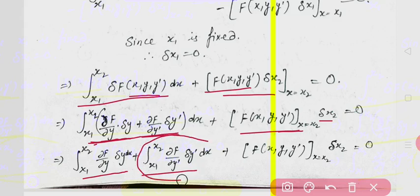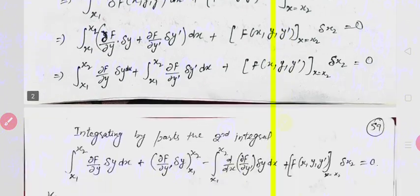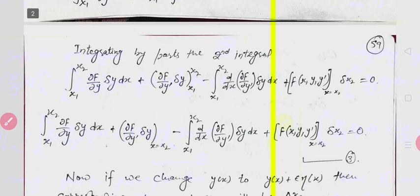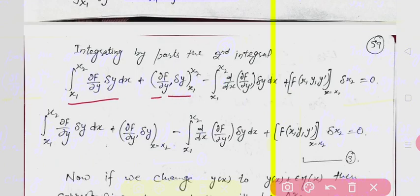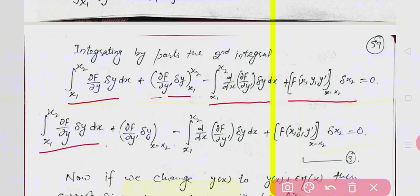We apply integration by parts to the third term, just as we did in previous theorems. Opening the second term by integration by parts: first term is kept, derivative of first times integral of second, plus the remaining boundary term evaluated from x1 to x2 — that is, the value at x2 minus value at x1.